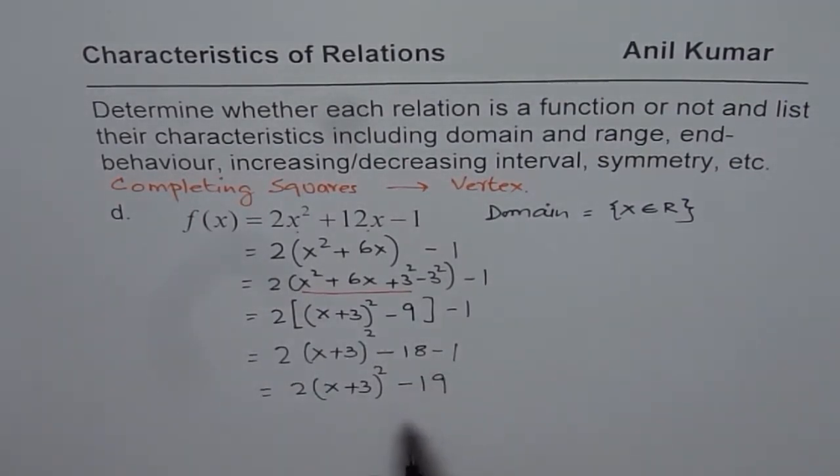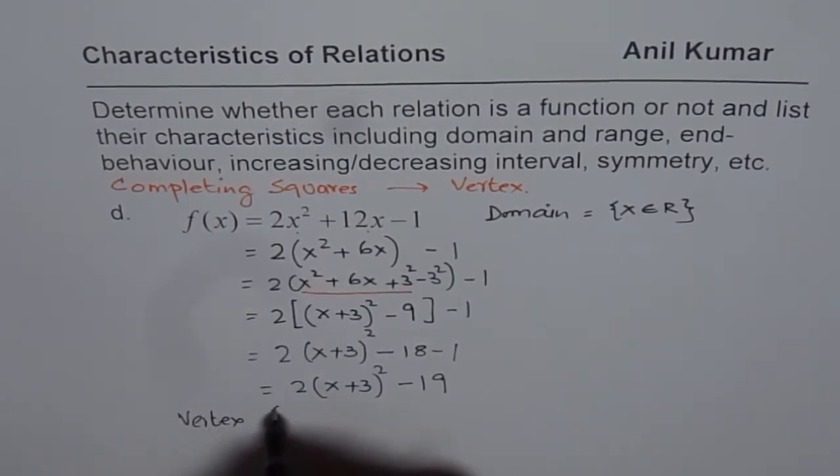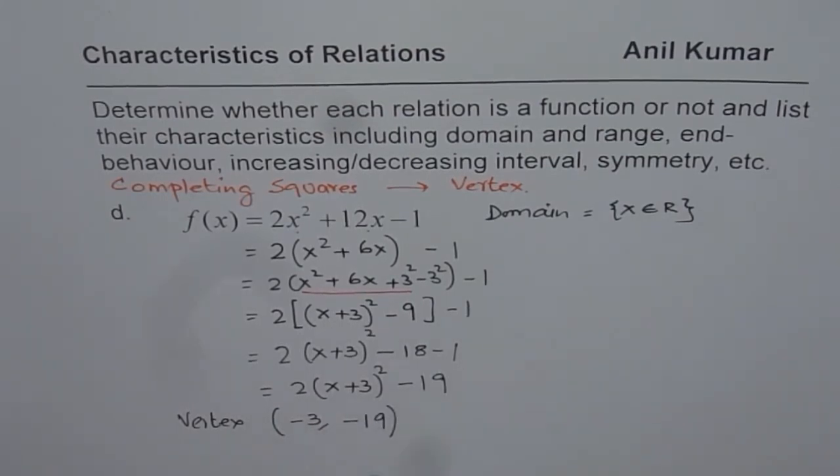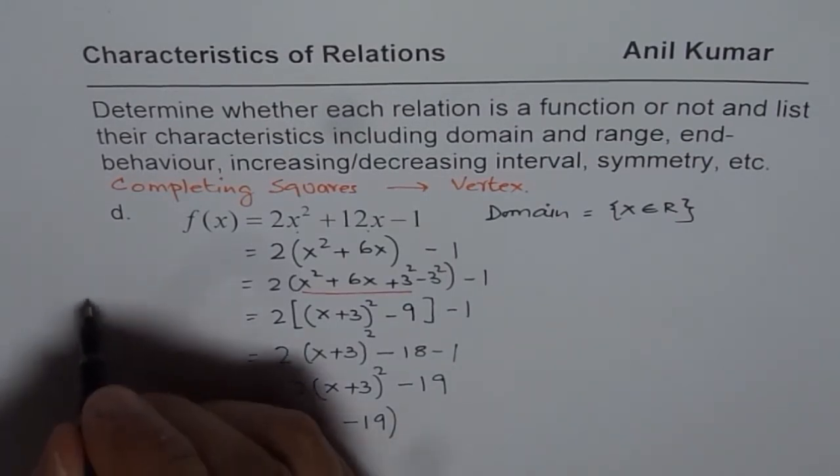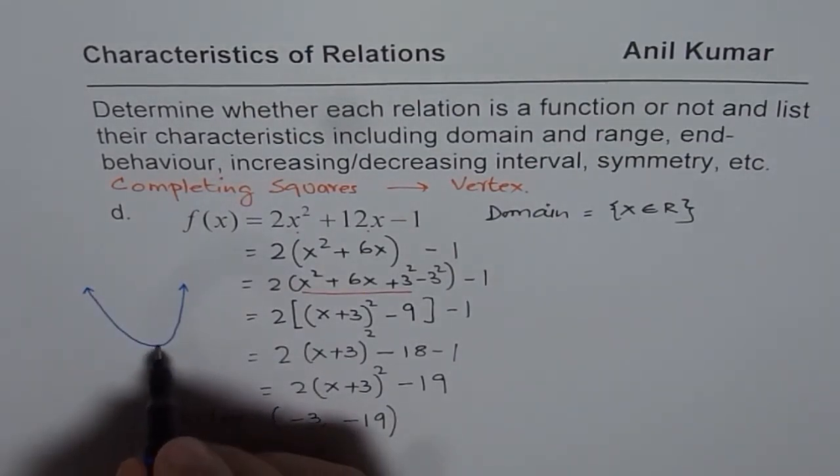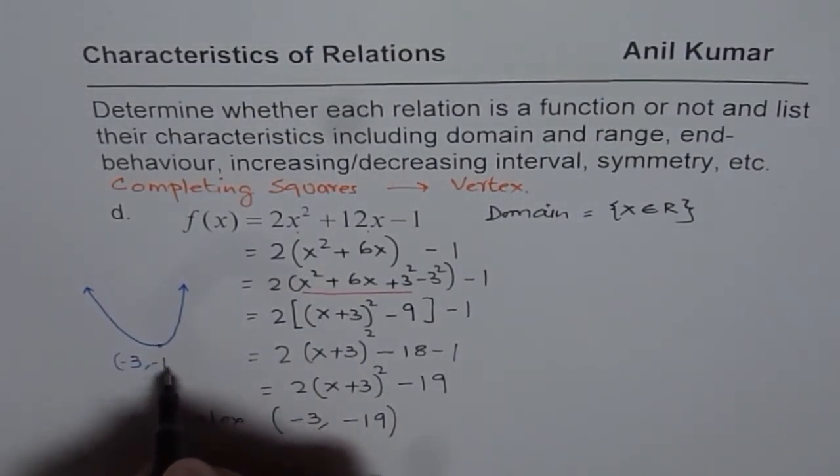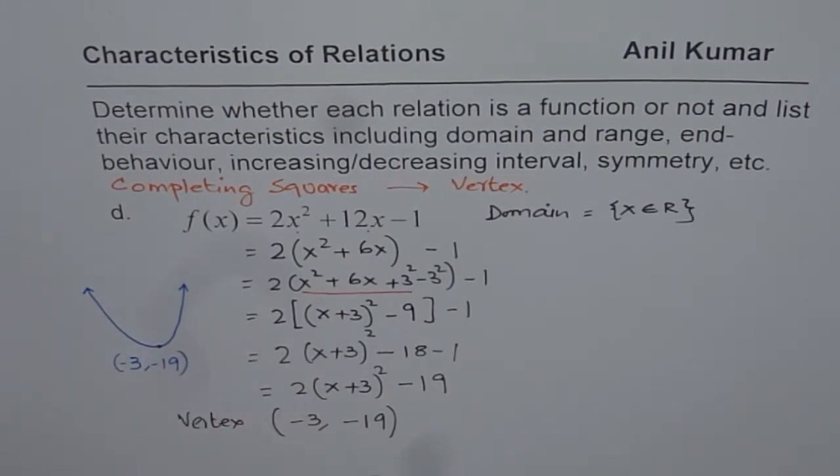So that means the vertex is at x value is -3, y value is -19. So what we have here is a parabola which opens upwards like this, whose vertex is at (-3, -19). Now, from here, we can easily write down the range of the function.